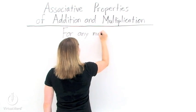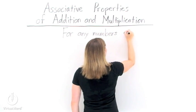Now there are two forms of the associative property, one for addition and one for multiplication.